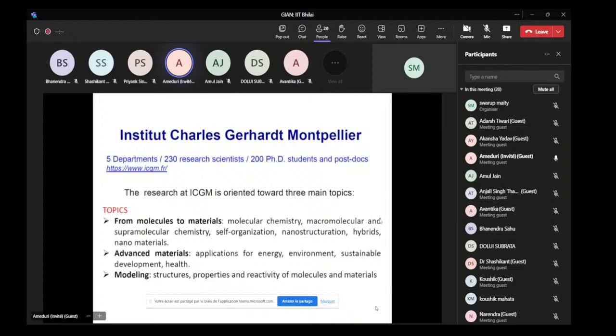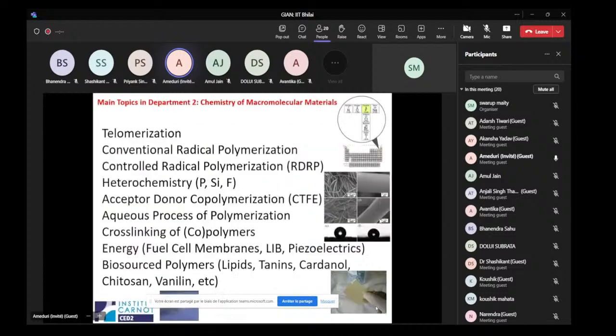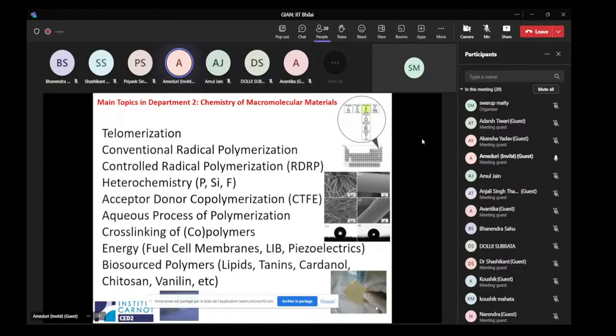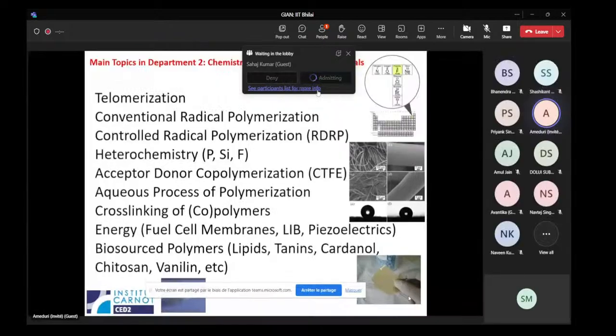In our department, we are working on different methodologies. One is traditionally developed on telomerization. I will dedicate a one-hour lecture on telomerization, which means low molecular weight but very well functionalized material. We work also on conventional and controlled radical polymerization, RDRP. We work on heterochemistry, phosphorus, silicon, and fluorine. And of course, lectures on fluorine will be given.